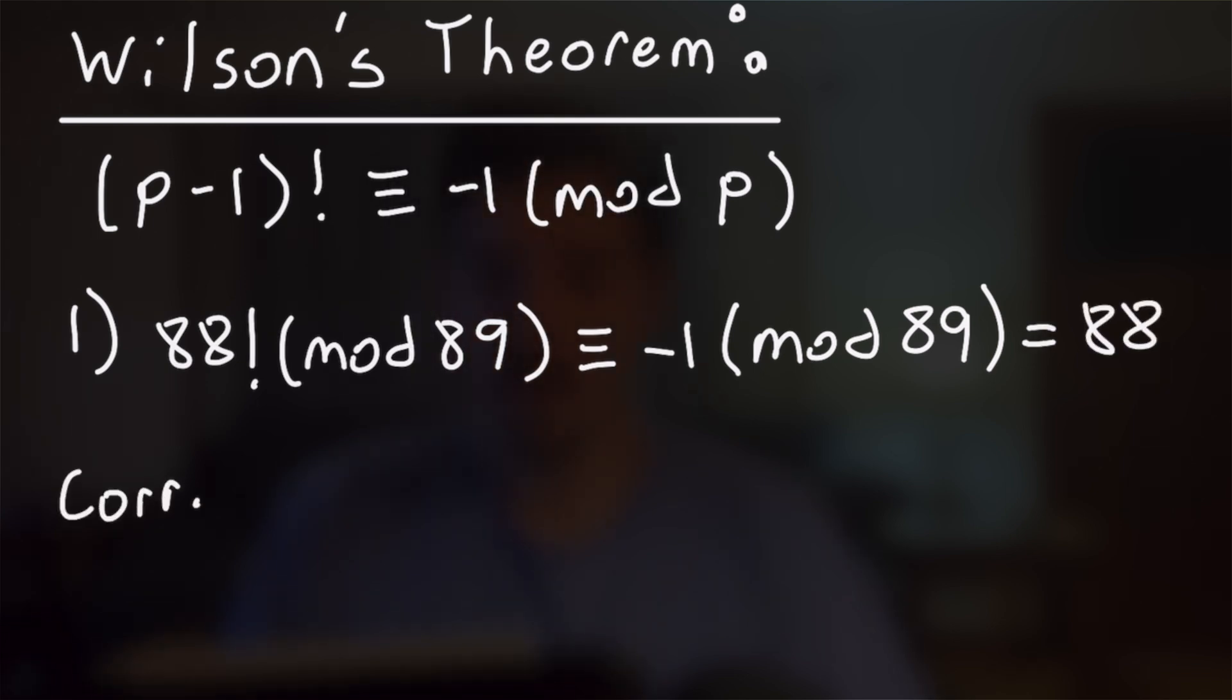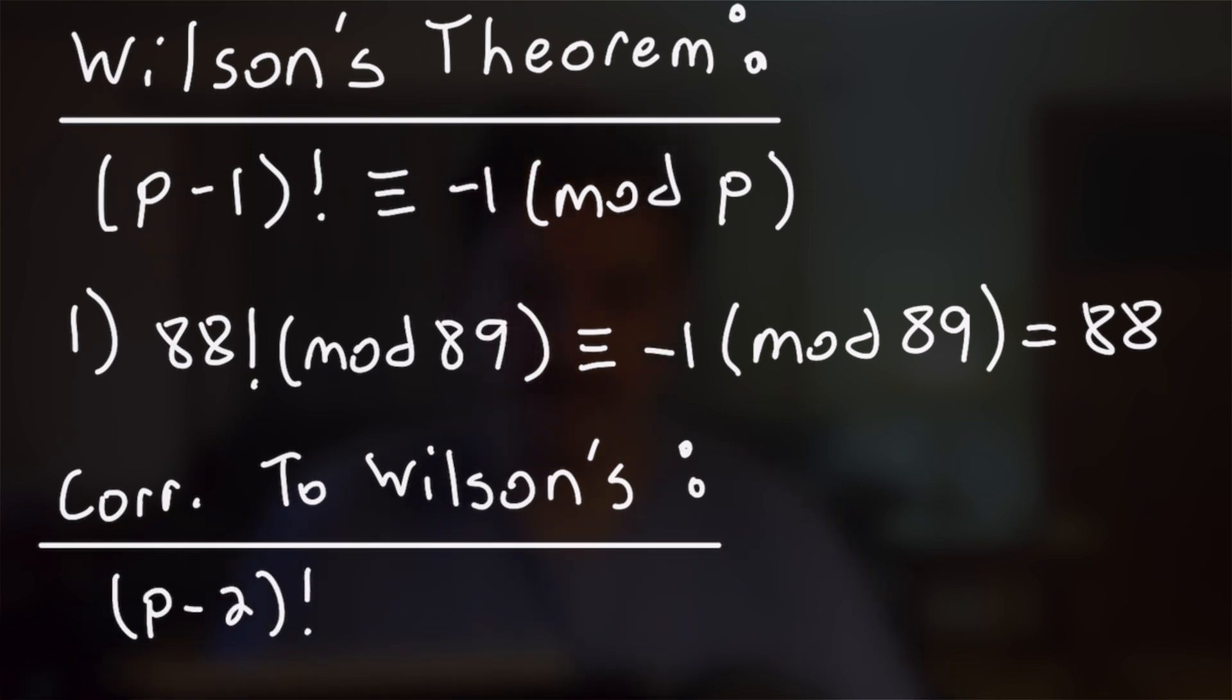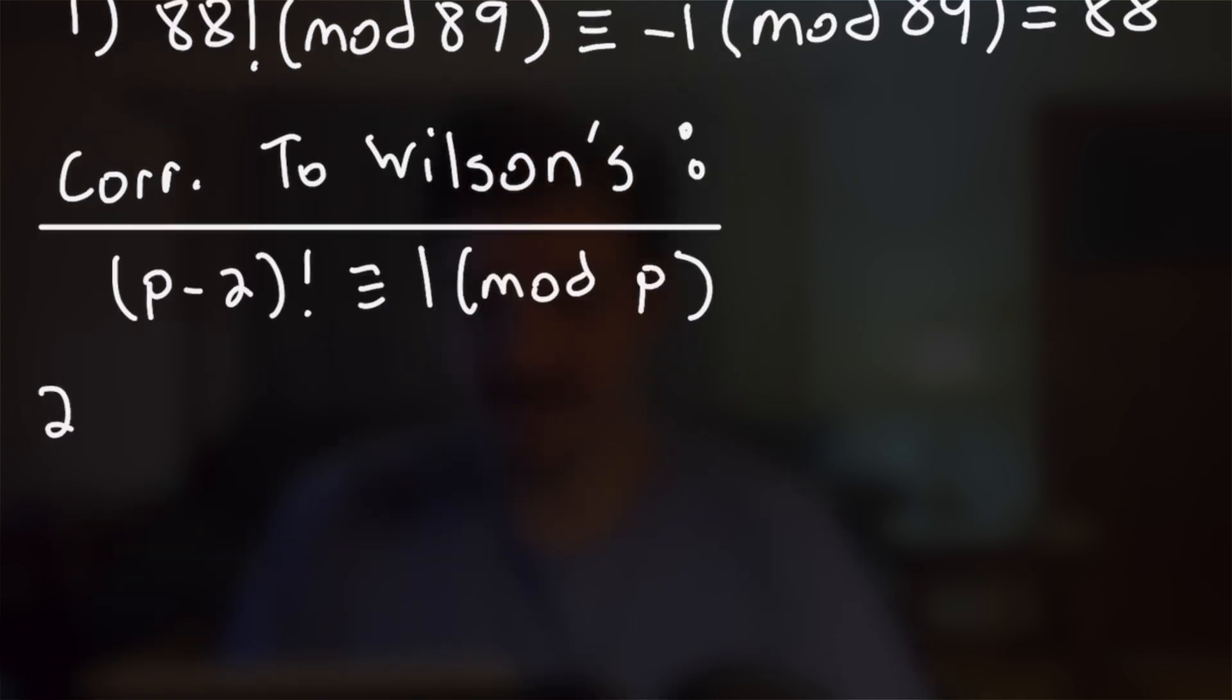So a quick corollary to Wilson's theorem, or some people just write Wilson's theorem this way, is that (p-2)! is congruent to 1 mod p. So that's going to be very applicable to our second example here, where we have 21 factorial, and we want to reduce that mod 23. So obviously, by this corollary, we will have that 21! is congruent to 1 mod 23.